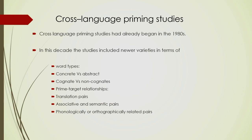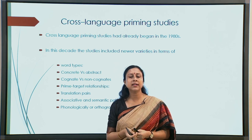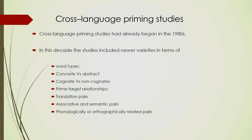Cross-language priming studies were already in place in the 1980s. By the 1990s, there were many more layers to that understanding, and as a result new trends emerged where newer varieties were incorporated. Newer types of stimuli were used — different kinds of word types such as concrete versus abstract words, and cognate versus non-cognate. These are the different kinds of word types utilized for creating stimuli.